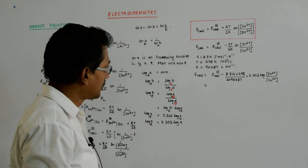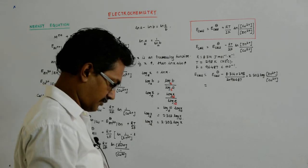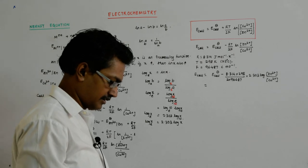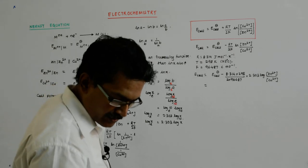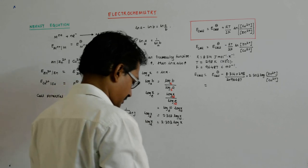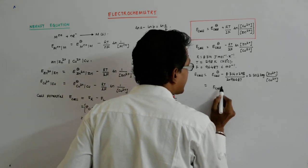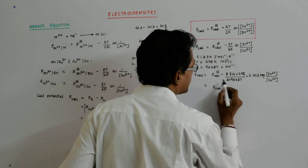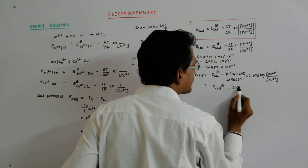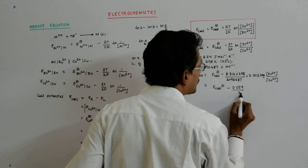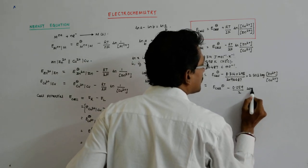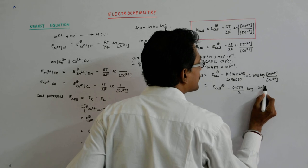That gives me 0.059. So I get E_cell minus E_cell standard minus 0.059 upon 2 log Zn²⁺.